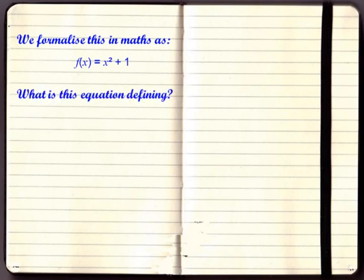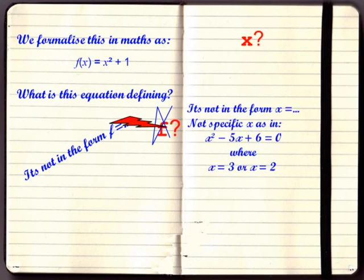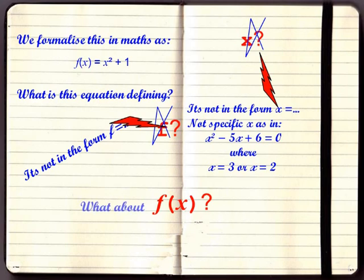When in math we say f(x) is x squared plus 1, what really are we defining? Are we defining f? Then the definition must be of the form f is something, but we don't have that. So let's strike that off. What about x? Are we defining x? Then we should have x equal to something, or at least an equation that could be solved to give specific values of x. Not the case here. Strike off x and what remains? How about f(x)? Could it be that we are defining f(x)?